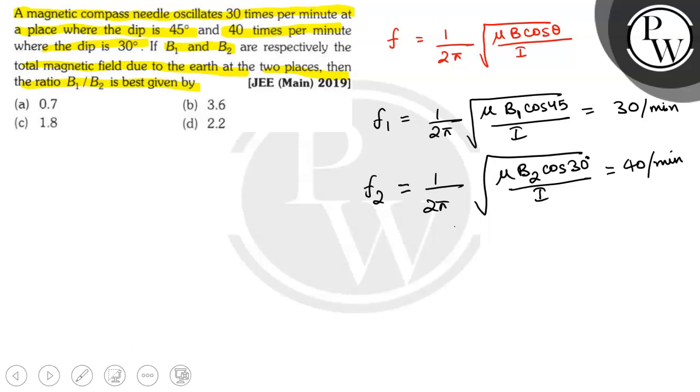So here we take the ratio F1 by F2: root under mu B1 cos 45 by I over root under mu B2 cos 30 by I, which equals 30 by 40, which is equal to 3 by 4.